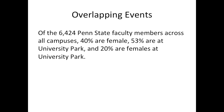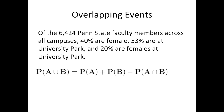Let's look at an example. Of the 6,424 Penn State faculty members across all campuses, 40% are female, 53% are at University Park, and 20% are females at University Park. Being female and being at University Park are not disjoint events, because it is possible to be female at University Park. In this case, we have to use the second formula: the probability of A or B equals the probability of A plus the probability of B minus the probability of A and B.